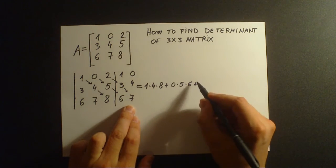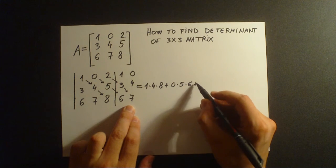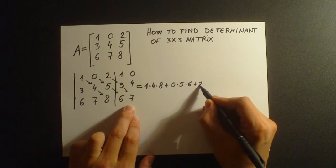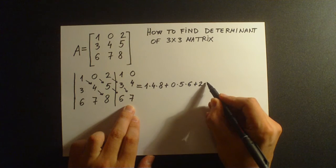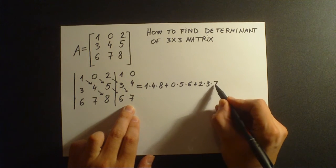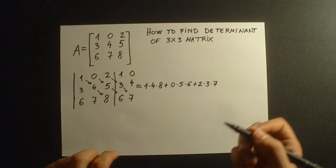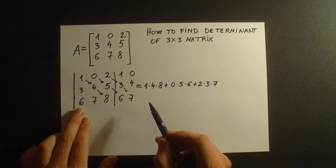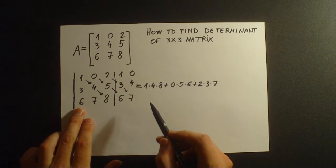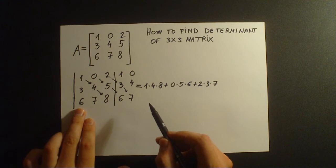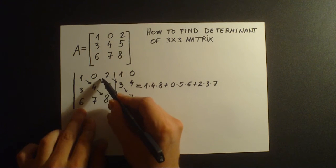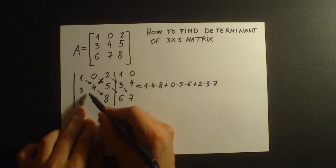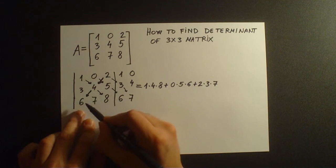Then we'll add the elements of the third diagonal: 2 times 3 times 7. And then we're going to start subtracting the elements of diagonals from the other side. We're going to go from the other side; elements of this diagonal are 2, 4, 6.